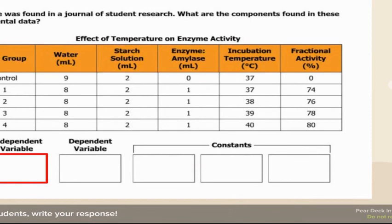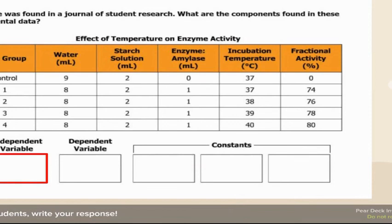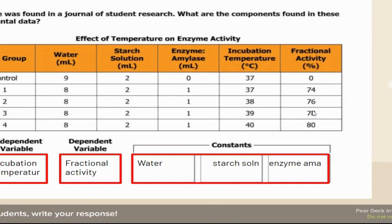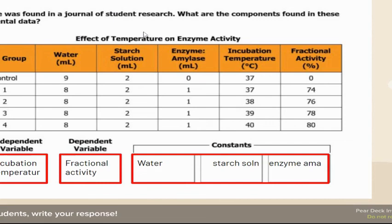More constants, independent variable, and dependent variables. Constants are whatever stays the same — water, starch, and enzyme amylase are constants. A dependent variable depends on the independent variable. Fractional activity depends on temperature, as shown in the title: effect of independent variable on dependent variable.